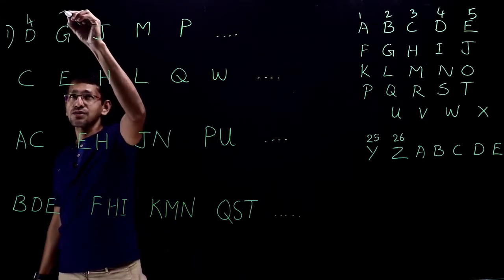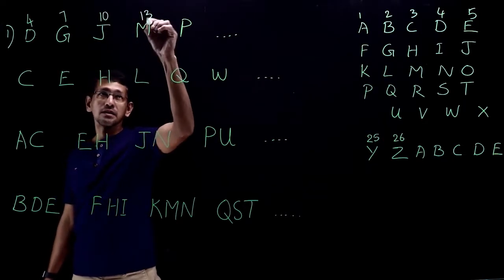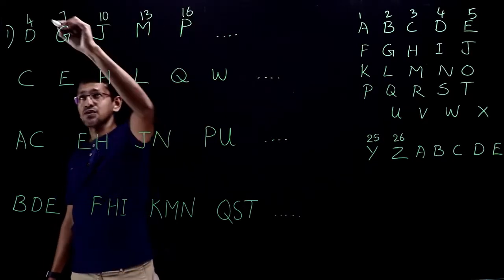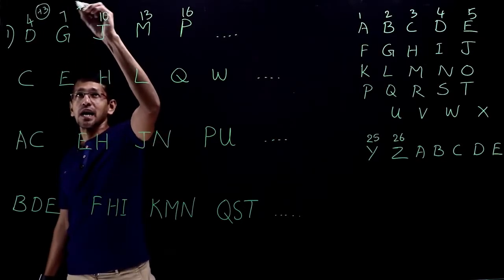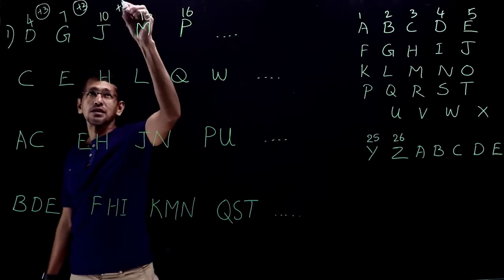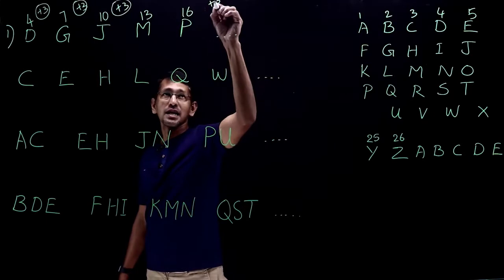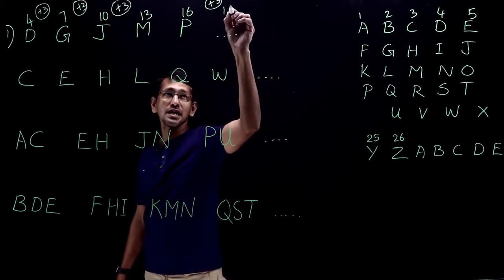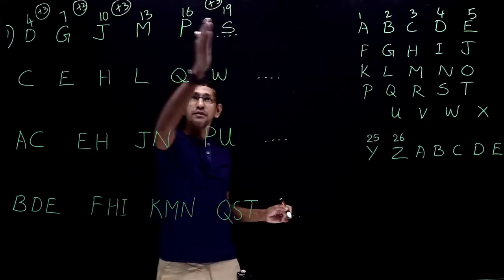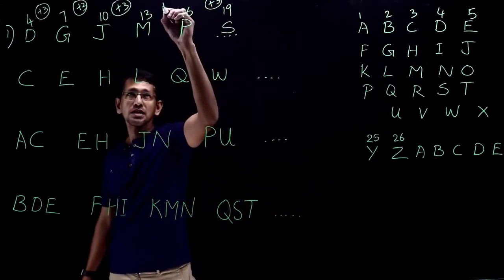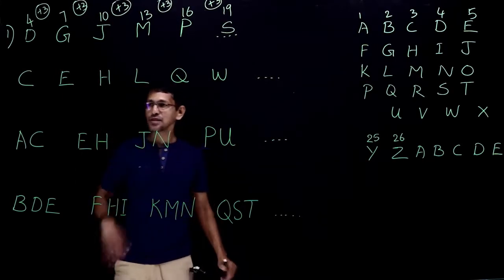Let's try this with position values. D is 4, G is 7, J is 10, M is 13, P is 16. So 4 plus 3 equals 7, 7 plus 3 equals 10, 10 plus 3 equals 13, 13 plus 3 equals 16, 16 plus 3 equals 19. So 19, the letter S. We got the same answer. However, this is much easier for us to figure out the answer.